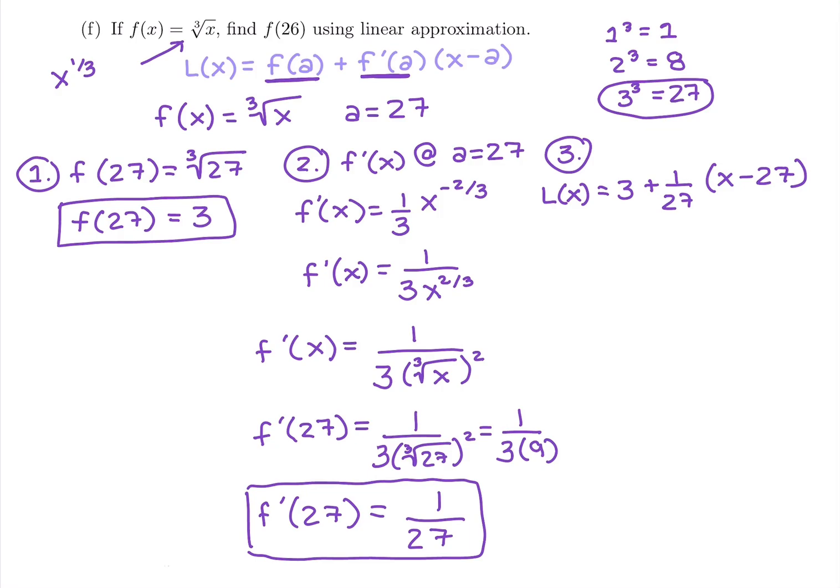We're going to use this to figure out f of 26. f of 26 is approximately going to be the same thing as L of 26. So if we plug in L of 26, we're going to get 3 plus 1 over 27 times 26 minus 27.